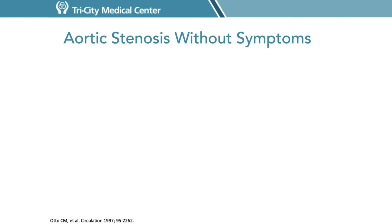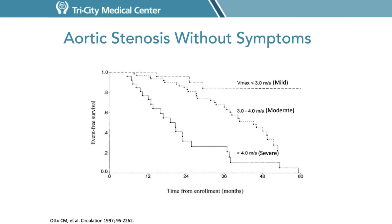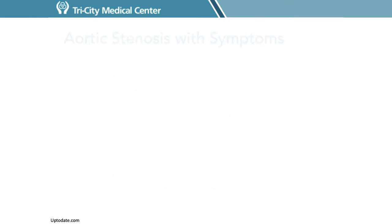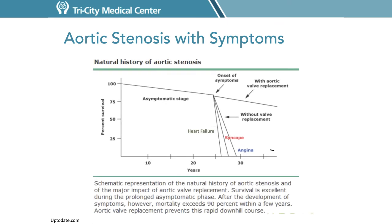Aortic stenosis can progressively develop without symptoms for many years. Once aortic stenosis is accompanied by one or more symptoms, valve replacement is recommended to prevent a rapid downhill course. Possible symptoms include angina, syncope — which is passing out or losing consciousness — and heart failure. As you can see from this graph, in patients that don't have a valve replacement with the onset of symptoms, their chances of survival significantly decrease. But in patients who do get a valve replacement, we can restore their natural longevity.